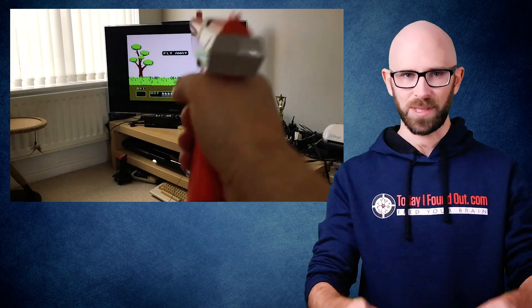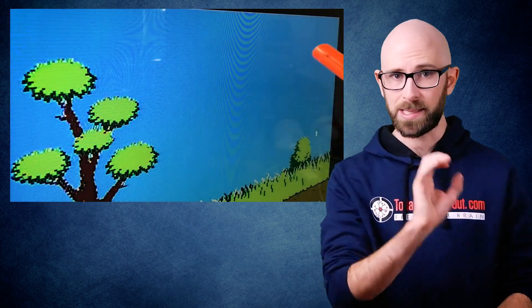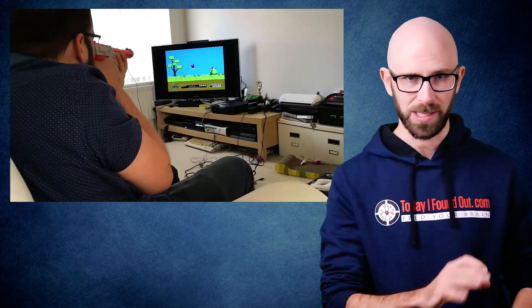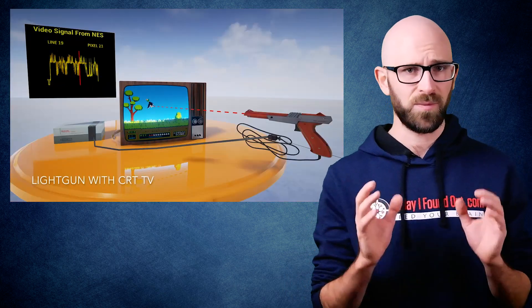When you pull the trigger, this causes the game to make the TV screen go completely black for one frame. At this point, the game uses the light sensor to sample the black color it's reading from your TV to give it a reference point. This is essential given that the ambient light in a particular room and other things of this nature can vary greatly.